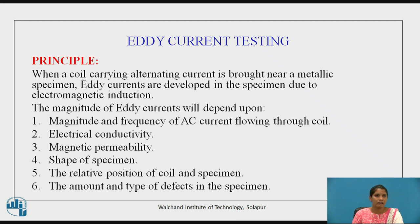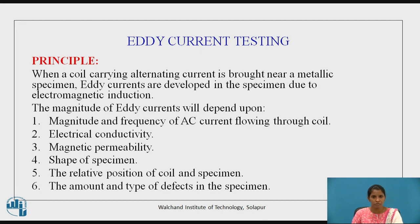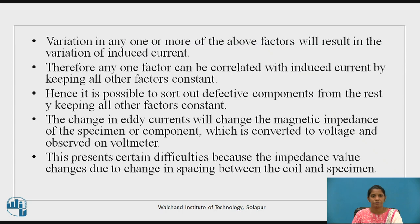Eddy current testing: when alternating current is brought near a metallic specimen, eddy currents are developed due to electromagnetic induction. The magnitude of eddy currents depends upon the frequency of alternating current flowing through the coil, magnetic permeability, shape of the specimen, relative position of the coil and specimen, and the amount and type of defect in the specimen. Variation in any one of these factors results in variation of the induced current. The change in eddy current changes the magnetic impedance of the specimen, which is converted to voltage and observed on a voltmeter.